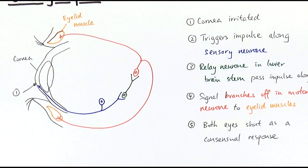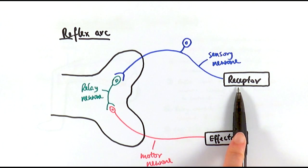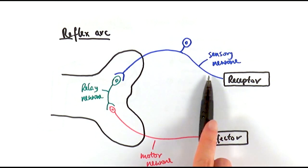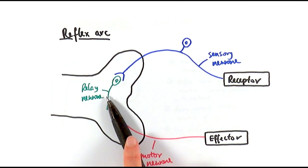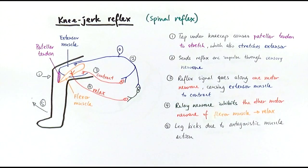That covers the blinking reflex. To recap: reflexes are very important for survival because they are involuntary, innate, not learned, and extremely fast, protecting us from danger. The reflex arc has this general structure: the receptor detects the stimulus; the impulse travels along the sensory neuron to a relay neuron found either in the spinal cord or in the brain; then the signal is relayed to the motor neuron and on to the effectors, which trigger a particular response to protect us.